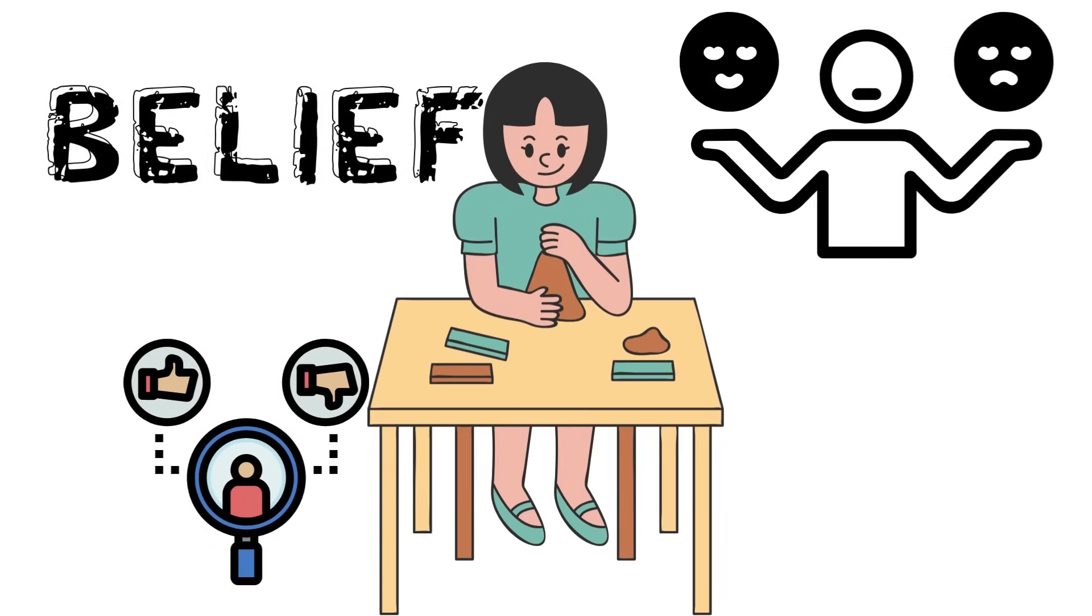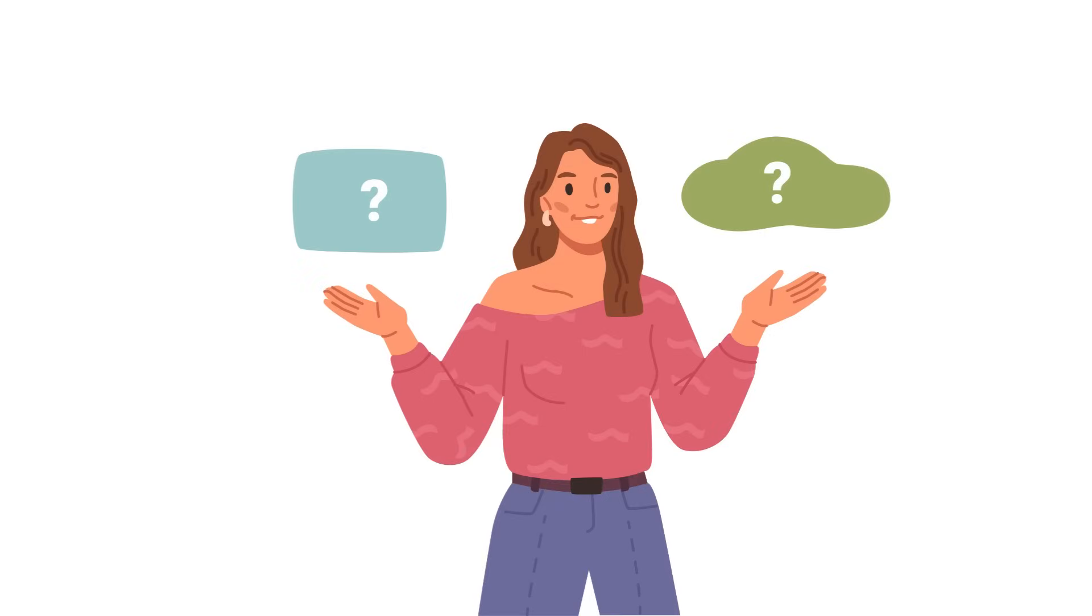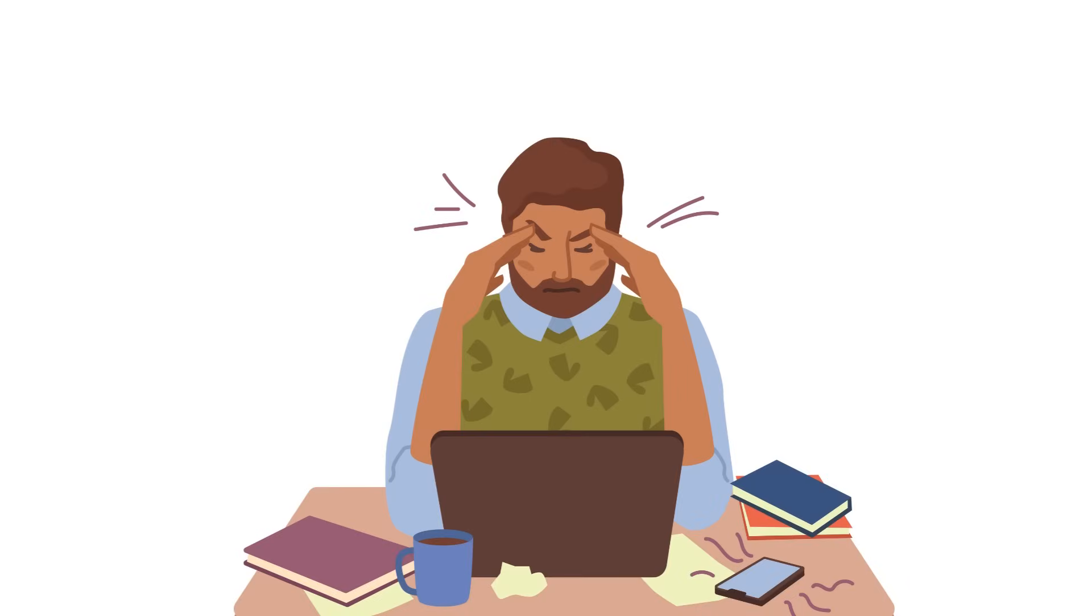Consider a simple example: your favorite color. Did you choose to like that color? Or did a complex interplay of genetic predispositions, cultural influences, and personal experiences lead to that preference? Can you, at this moment, decide to change your favorite color through sheer force of will?